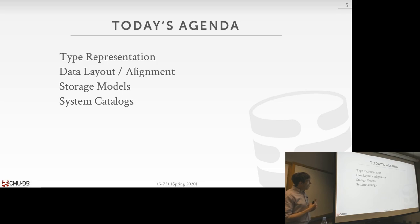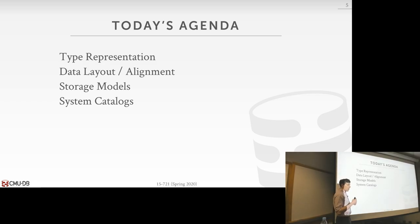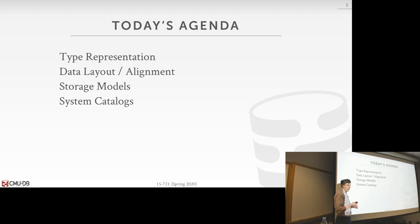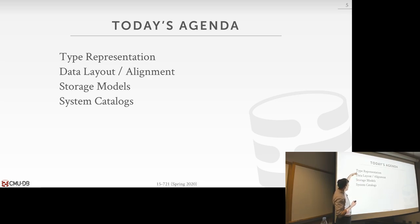Today we're going to talk about type representation — how we actually represent individual elements or attributes in a tuple. Then we'll build up to how we lay out those attributes for a single tuple, then different storage models, and if we have time, system catalogs. The bulk of the main material we want to focus on is storage models and above.